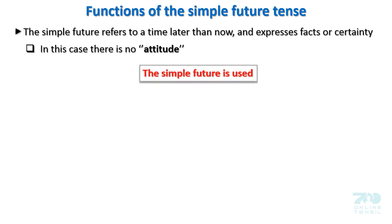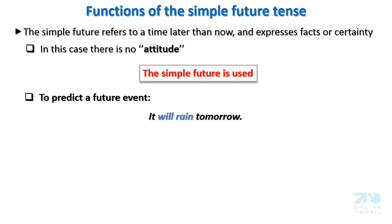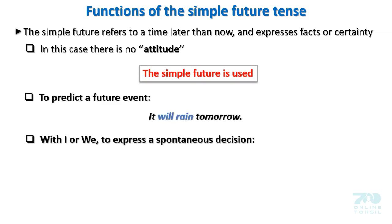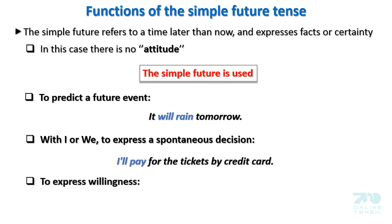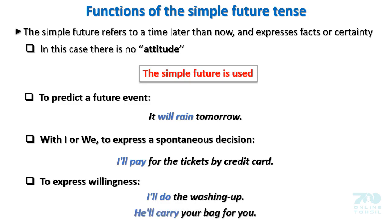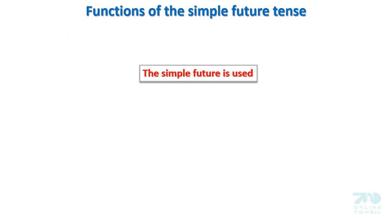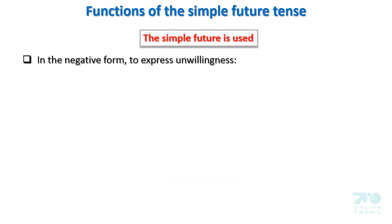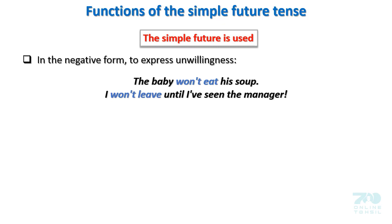The simple future is used to predict a future event: 'It will rain tomorrow.' With I or we, to express a spontaneous decision: 'I will pay for the tickets by credit card.' To express willingness: 'I will do the washing up.' 'He will carry your bag for you.' In the negative form, to express unwillingness: 'The baby won't eat his soup.' 'I won't leave until I have seen the manager.'